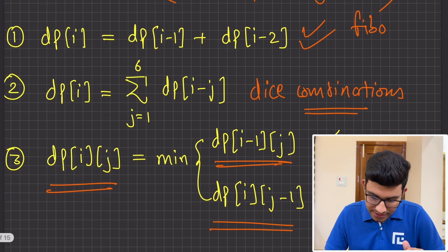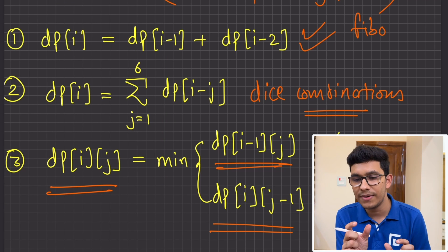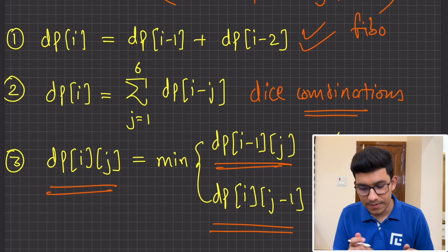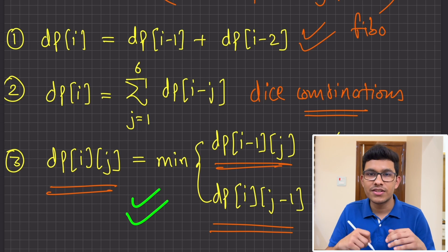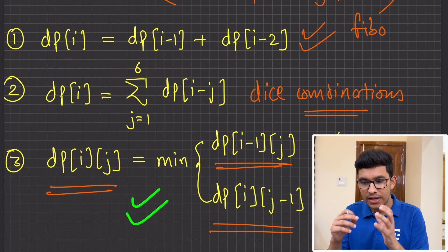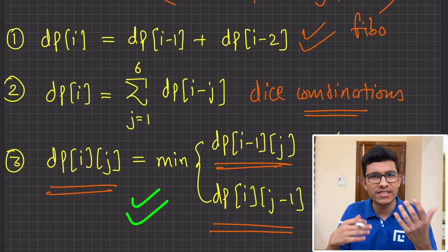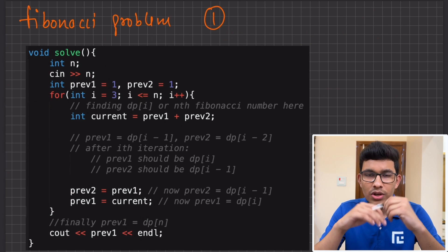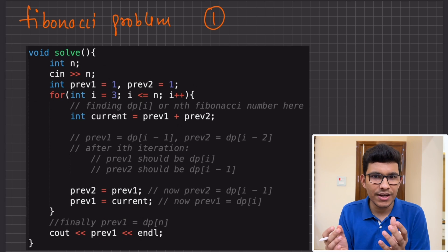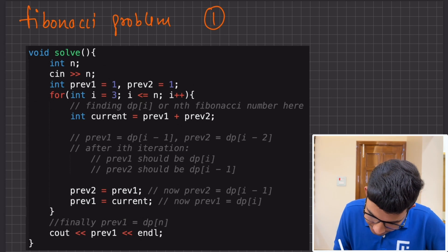To summarize the three examples: in the Fibonacci problem you only store the previous two elements; in the Dice Combinations problem you store the last six states; and in the 2D grid example you store only the last row. We will now look at how to code these optimizations, starting with the Fibonacci problem.